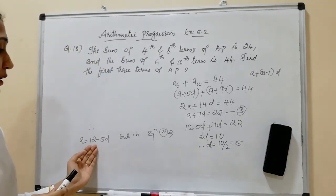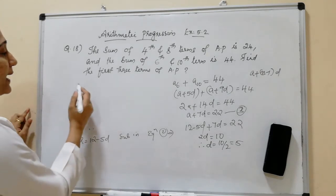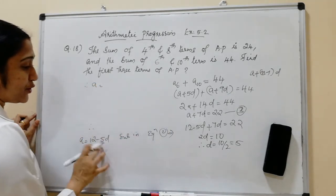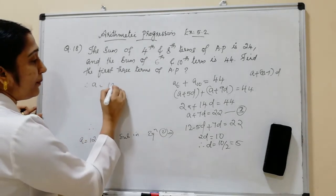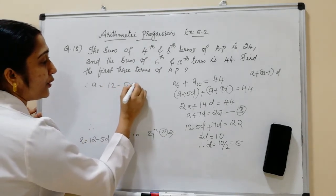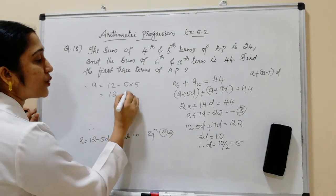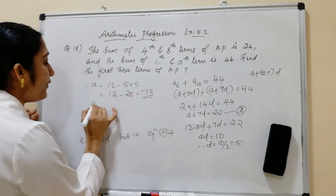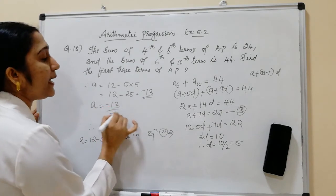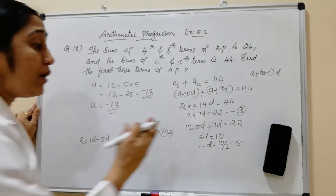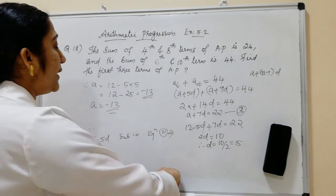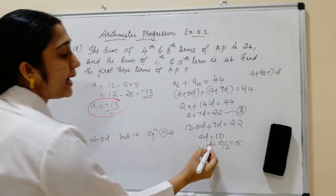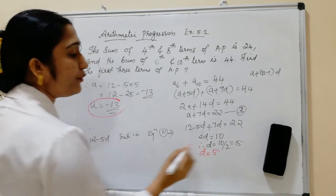Substituting D equals 5 back into equation number 2: A equals 12 minus 5 times 5, which is 12 minus 25, equals minus 13. So the first term A is minus 13, and the common difference D is 5.